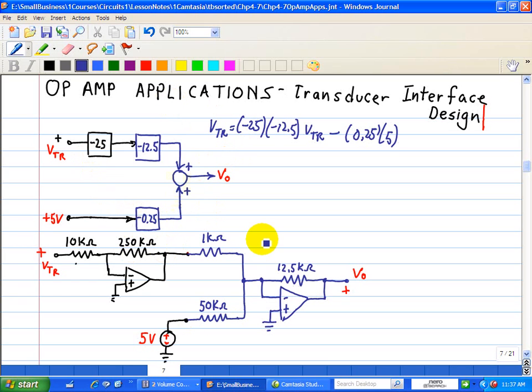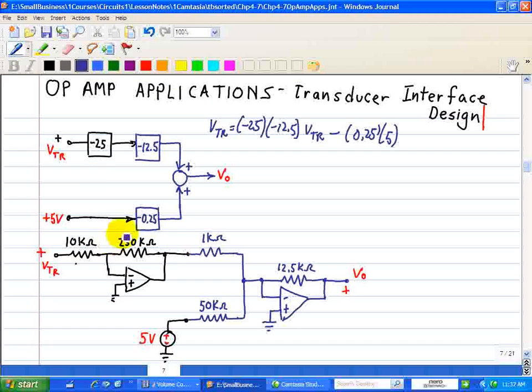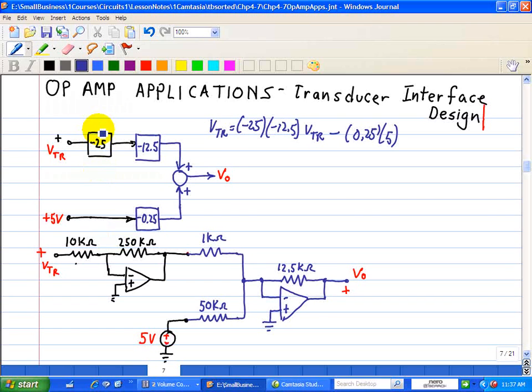So here's the op-amp realization associated with this block diagram. You can see here 250k divided by 10k is negative 25. And that 12.5k divided by 1k, this is an inverting op-amp on this stage, or summer. And that's a negative 12.5.